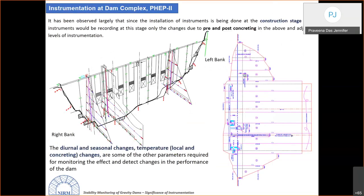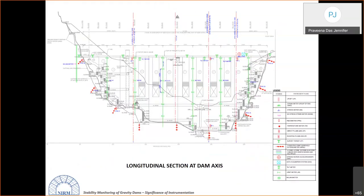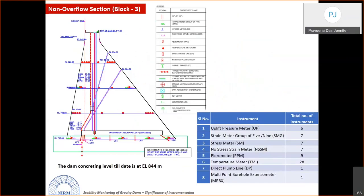Instrumentation is being carried out during the pre-construction and construction stages. Instruments monitor changes occurring during construction, and they also account for diurnal, seasonal, and temperature changes required for performance monitoring. The overall instrumentation layout shows joint meters (in green) on top and tilt meters distributed across all blocks.